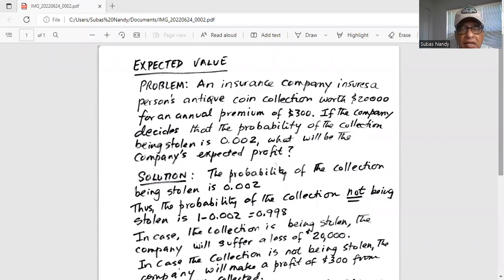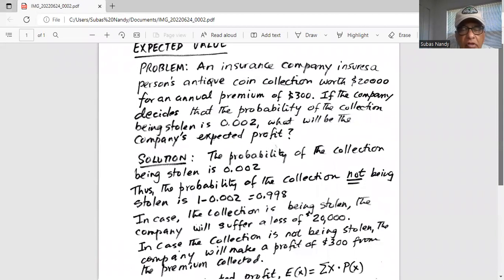An insurance company insures a person's antique coin collection worth $20,000 for an annual premium of $300. If the company decides that the probability of the collection being stolen is 0.002, what will be the company's expected profit solution?